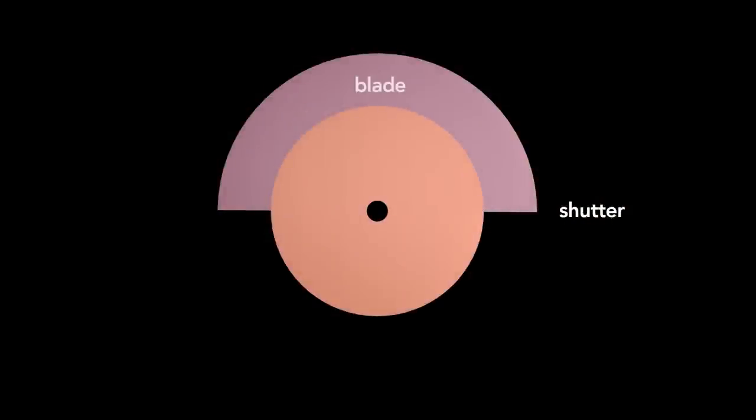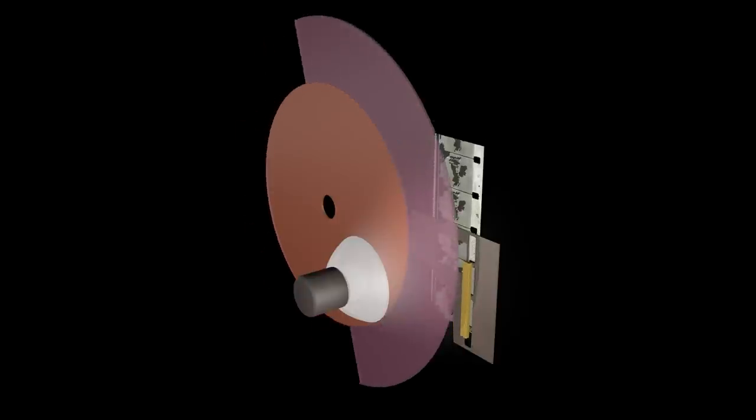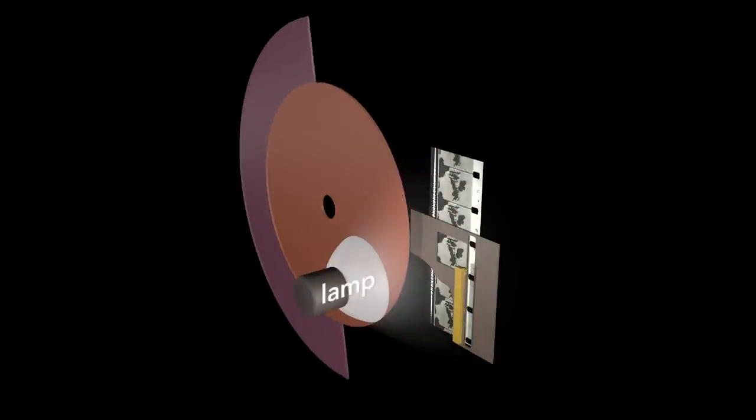The shutter is a disc with a blade that protrudes from half the circumference. The other half is open. The shutter rotates once every frame and is synced so that the shutter blade blocks light from the lamp while the shuttle is advancing the film. This prevents the projection of film motion on the screen.